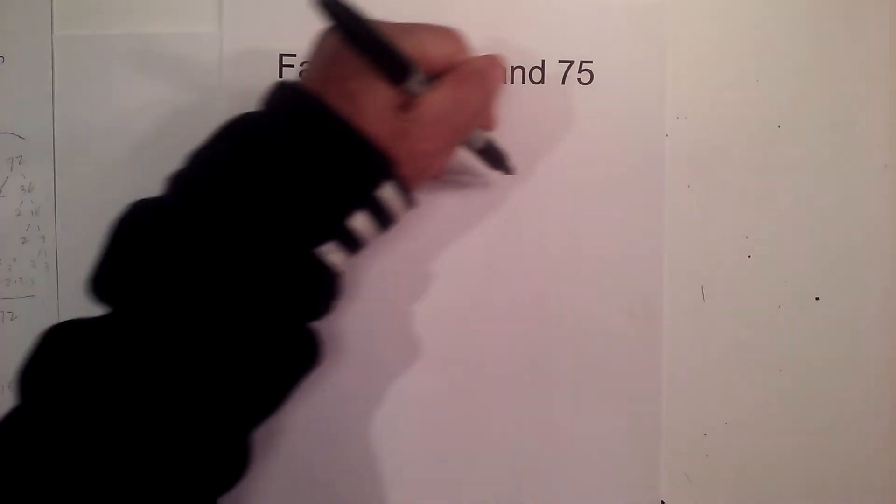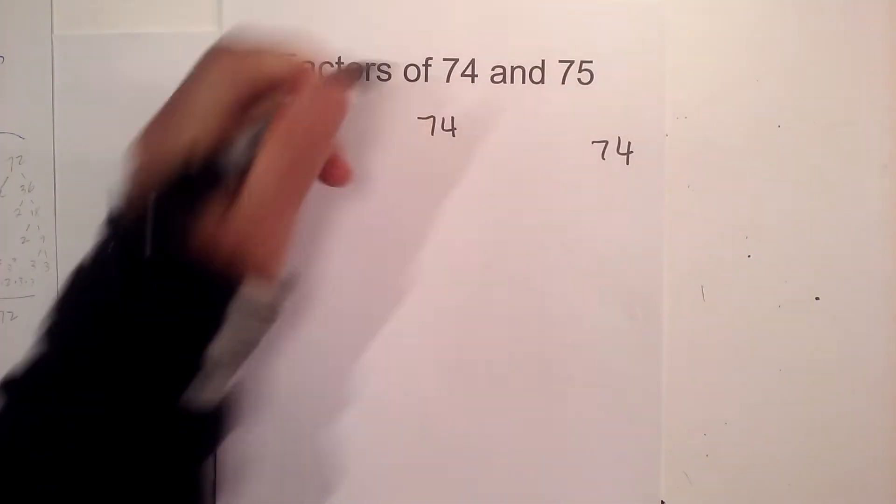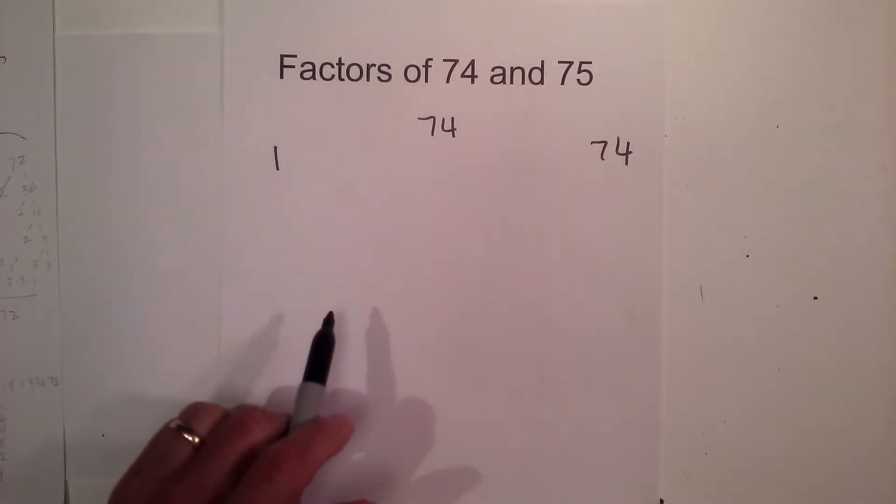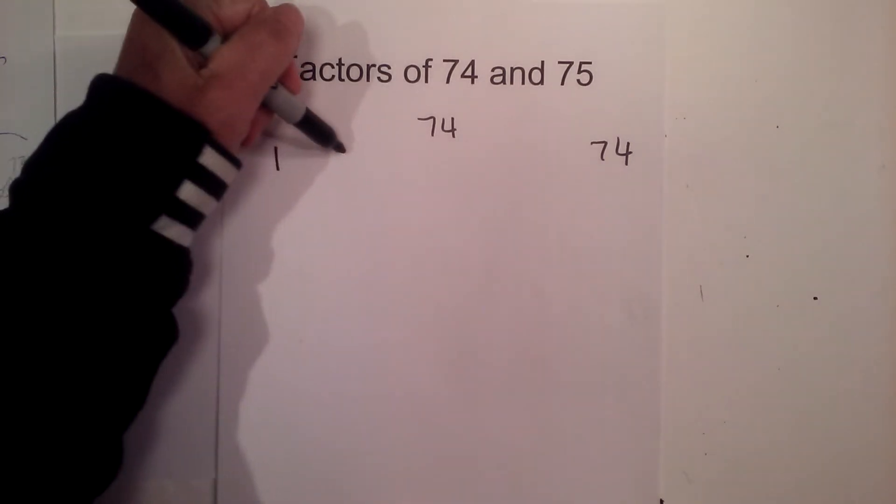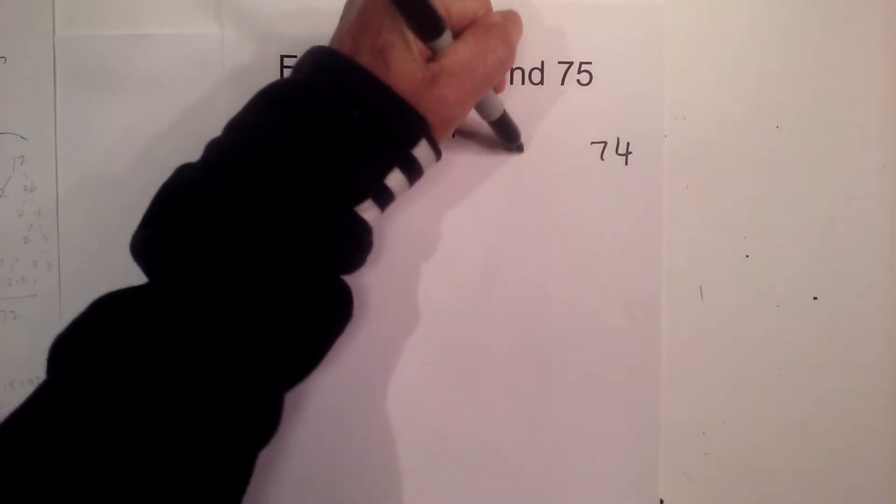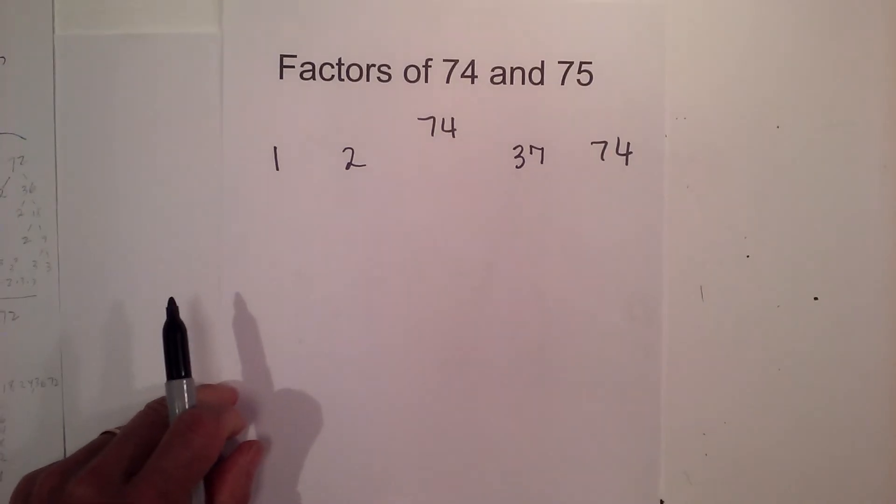So I'm going to begin with 1 times 74, then find the numbers in between multiplied together. 2 goes into 74. 2 times 37 equals 74.